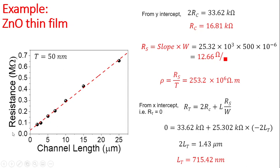I do transmission line measurements and collect resistance data as a function of channel length for different channel lengths. I fit a straight line through that. From this I found that the slope is 33.62 kΩ, which is 2Rc, so Rc = 16.81 kΩ.